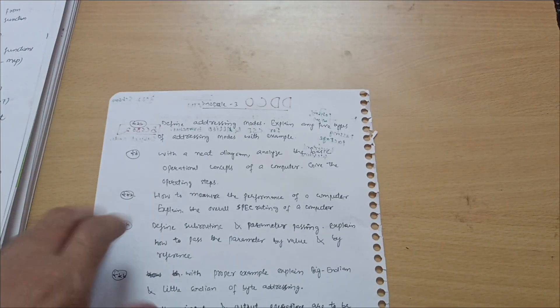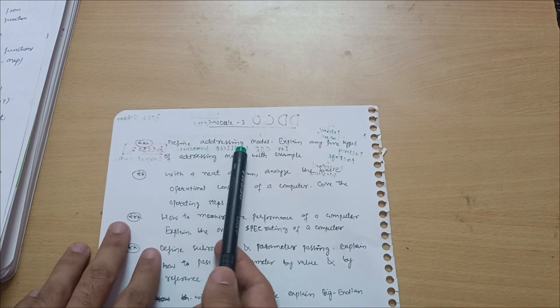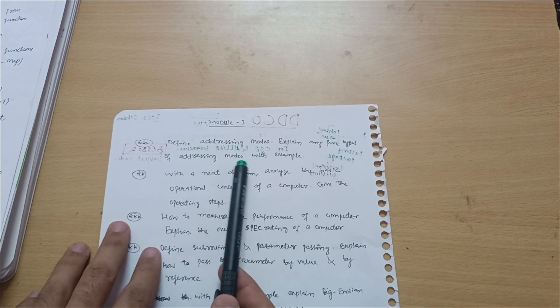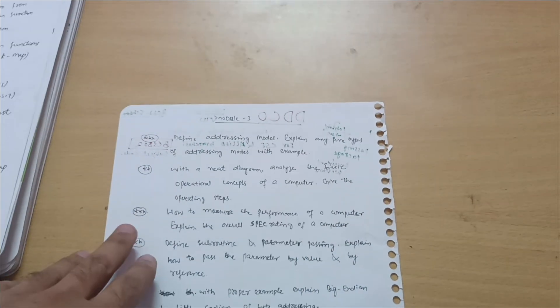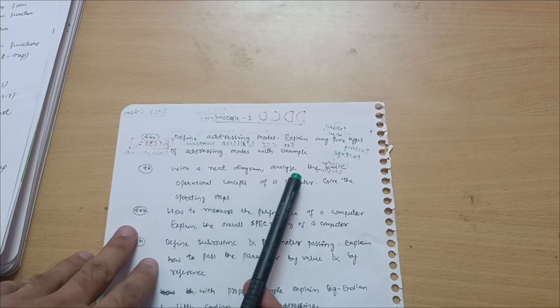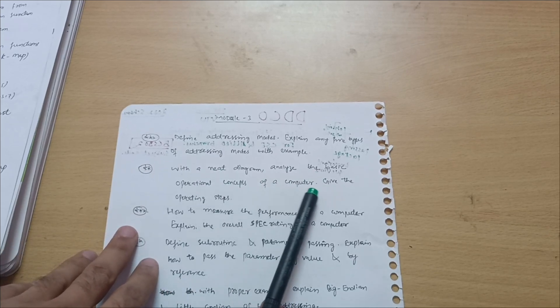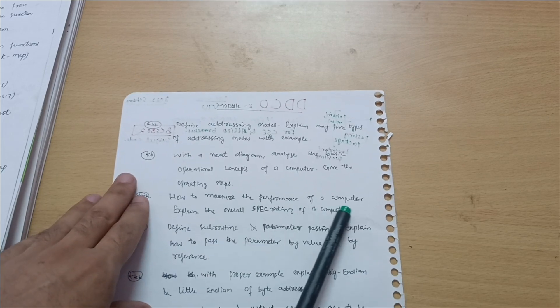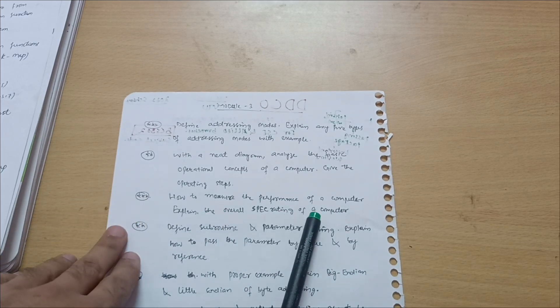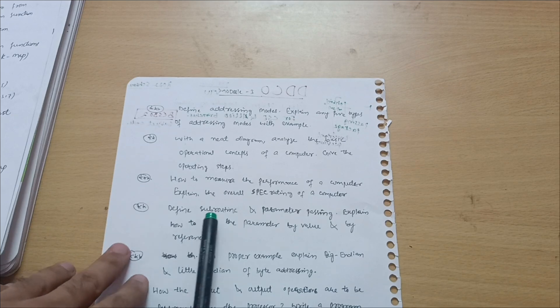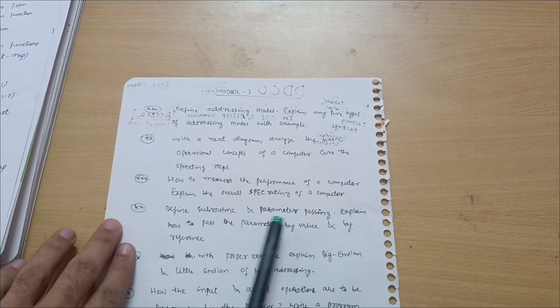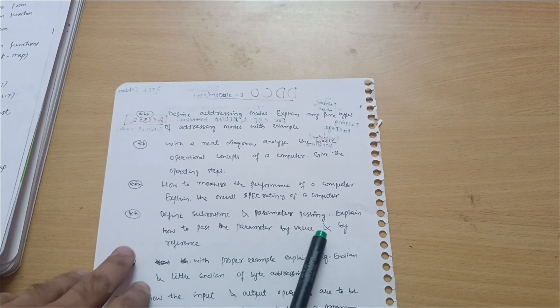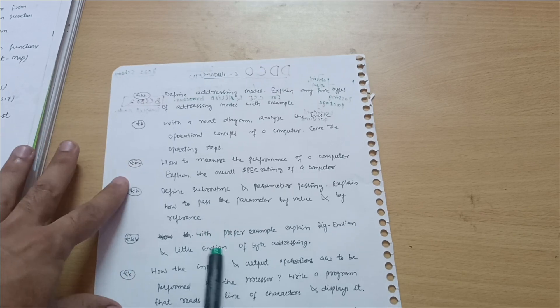Next is the module third: Define addressing modes, explain any five types of addressing modes with example. With the neat diagram analyze the basic operational concepts of a computer. Give the operating steps. How to measure the performance of a computer? Explain the overall SPEC rating of a computer. Define subroutine and parameter passing. Explain how to pass the parameter by value and by reference - most important one.